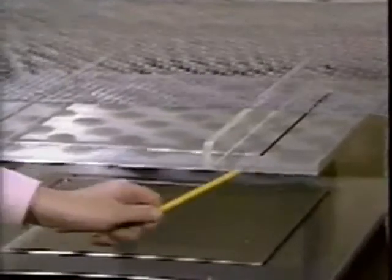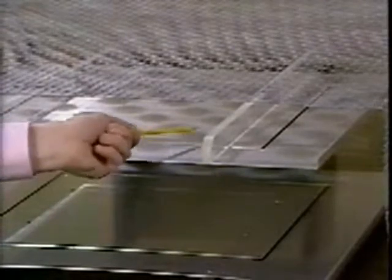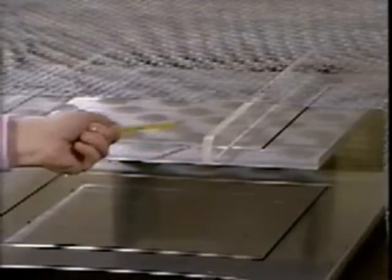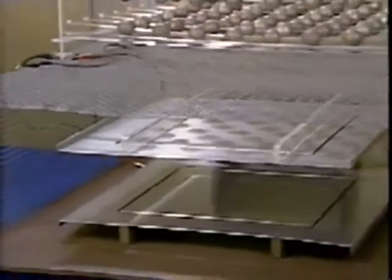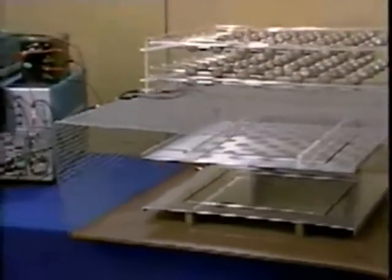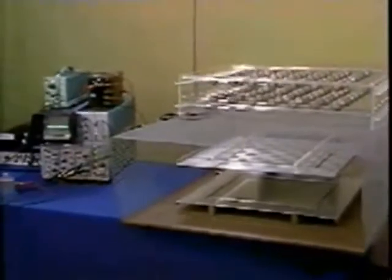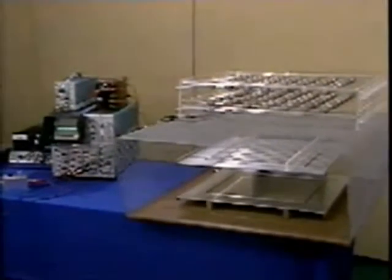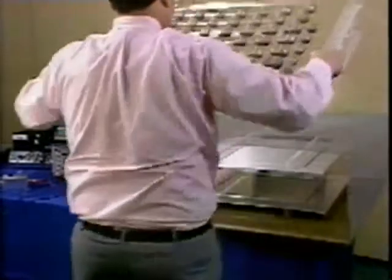Here's the top electrode. To avoid fringing effects, only the charge induced on this central section will be measured when we measure the capacitance. Here's how the dielectric is inserted between the plates.